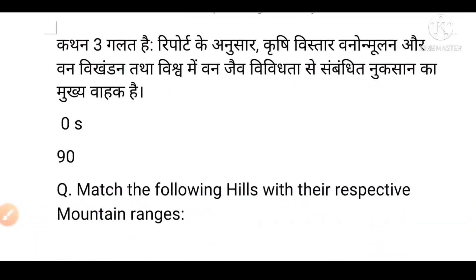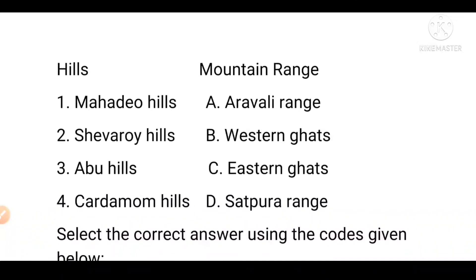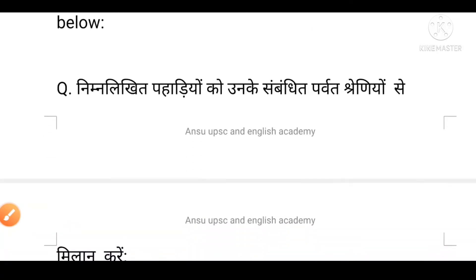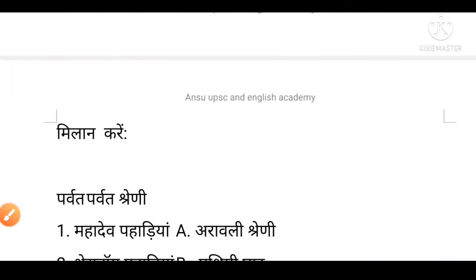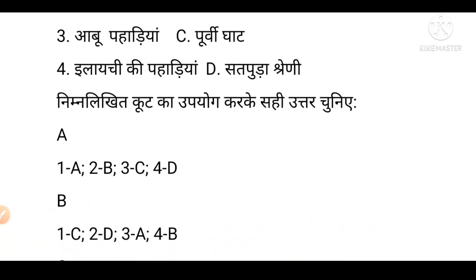Next question: Match the following hills with their respective mountain ranges. Mahadeo Hills — Satpura Range. Aravaili Range — Aravaili. Savory Hills — Western Ghats. Abu Hills — Aravaili. Cardamom Hills — Western Ghats. Eastern Ghats — Eastern Ghats.